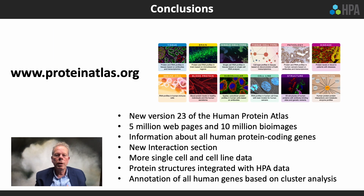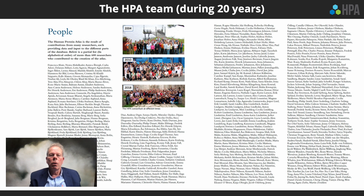In summary, a new version 23 of the Human Protein Atlas has been launched. It contains 5 million web pages and has information about all human protein-coded genes. We are proud to introduce a new interaction section, a lot more single cell data and cell line data, and new protein structure sections with integration of HPA data. We are also annotating all human genes based on cluster analysis. I would like to thank all the people involved during these 20 years, and I hope you can all enjoy the new version 23 of the Human Protein Atlas. Thank you very much for listening.